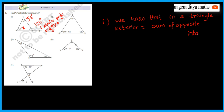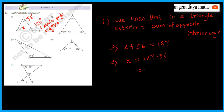x is equal to 123 minus 56. This is equal to 123 minus 56. So, 13 minus 6 is 7 and 11 minus 5 is 6, so this is 67.